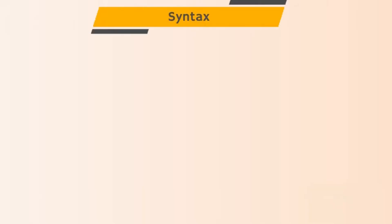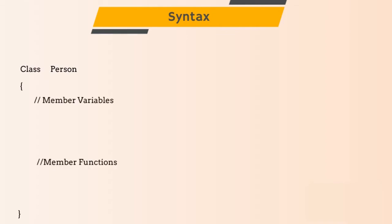Let's see the syntax of a class, object, and constructor. First we define a class using the class keyword, followed by the name of the class — which is Person in our example — and in curly brackets we define member variables and member functions. In our case the member variables are name, age, and gender. We have given the access specifier as public — soon I will make a separate video on that, but for now public means we can access these variables outside the class too.